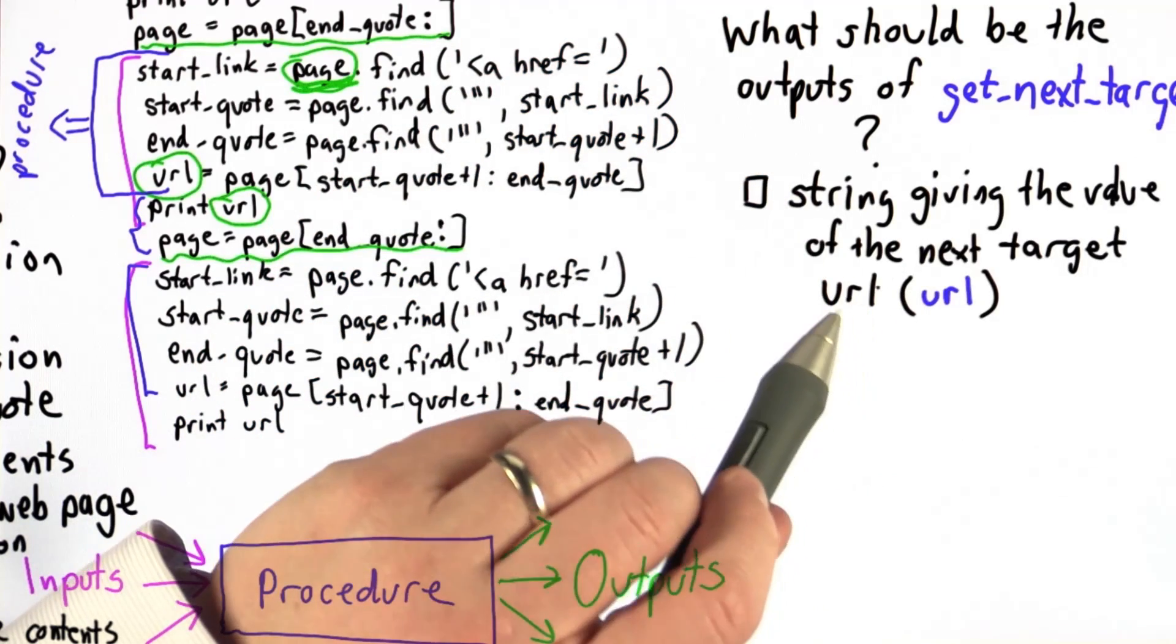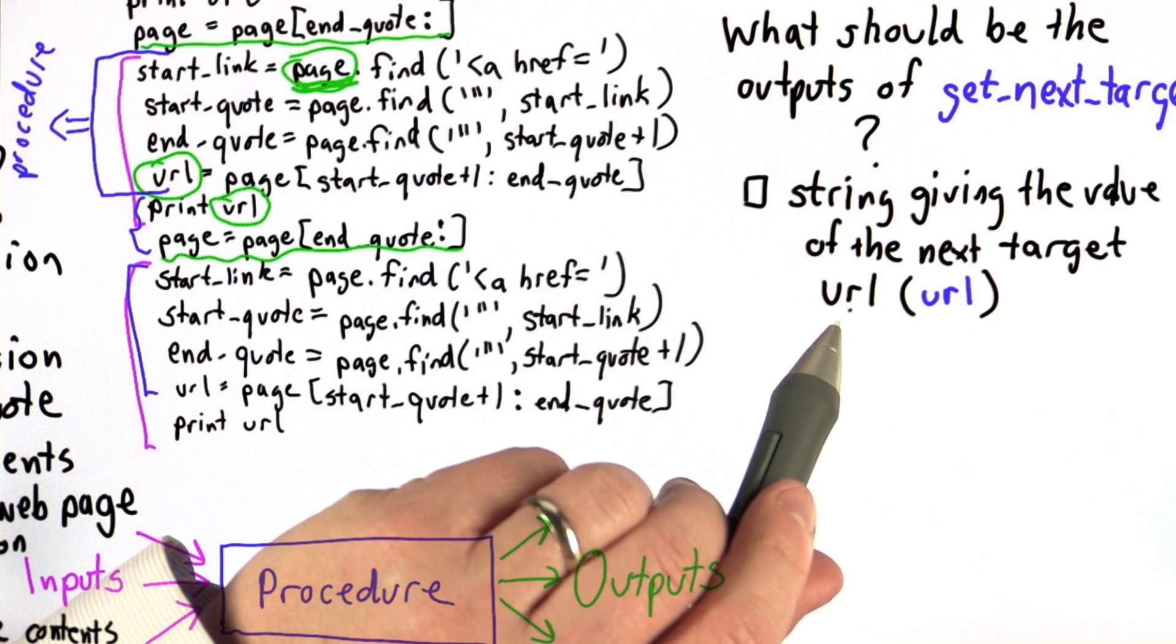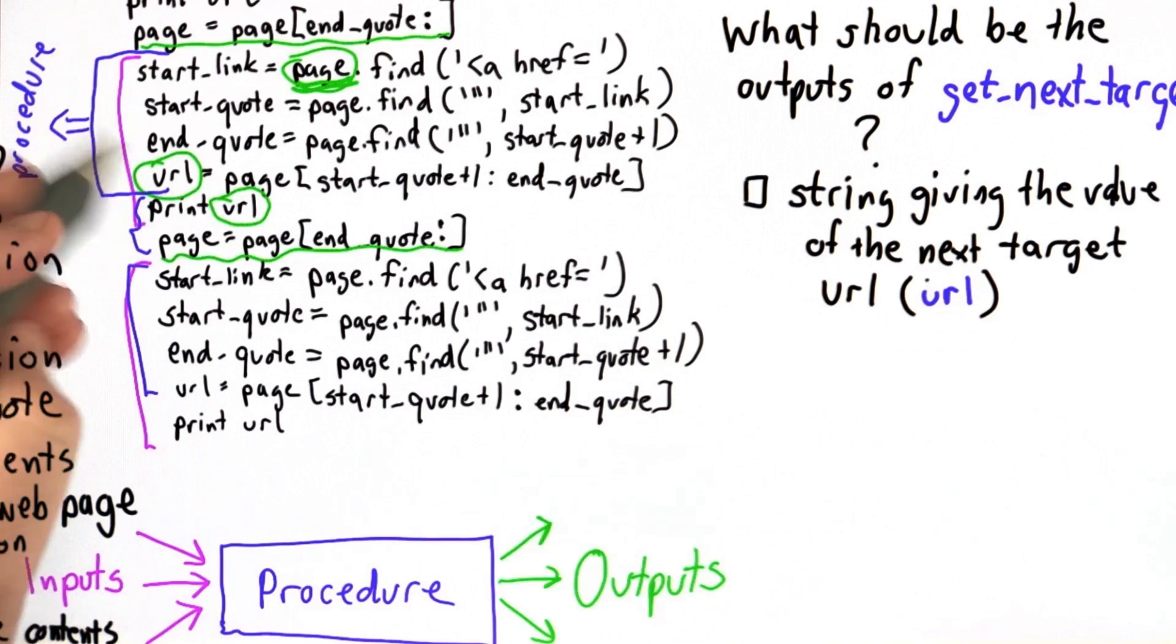So the first choice is the output should be a string giving the value of the next target URL found in the page, and that's what the variable URL holds here.